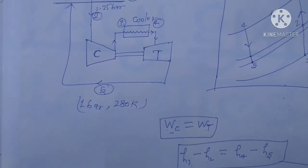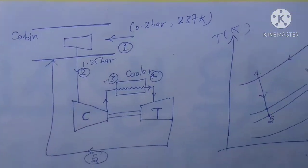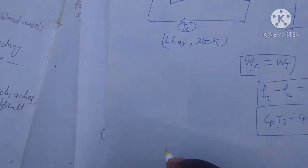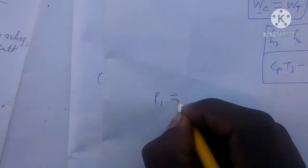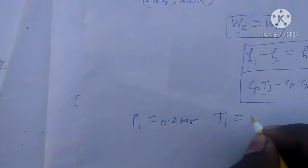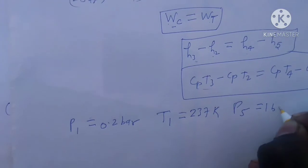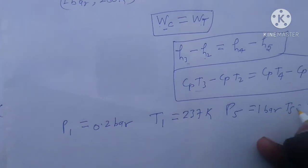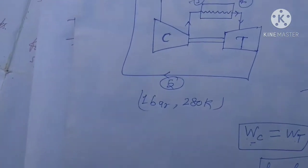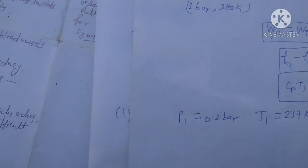We have a schematic diagram and a T-S (temperature-entropy) diagram. The given data is: P1 = 0.2 bar, T1 = 237 Kelvin, P5 = 1 bar (given as 1.25 bar from compressor), T5 = 280 Kelvin, and Wc equals Wt.